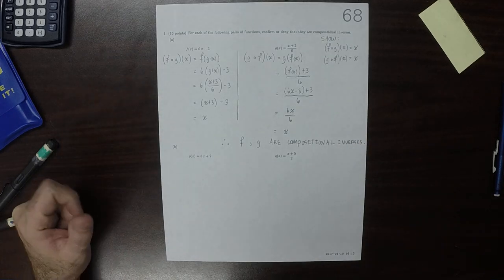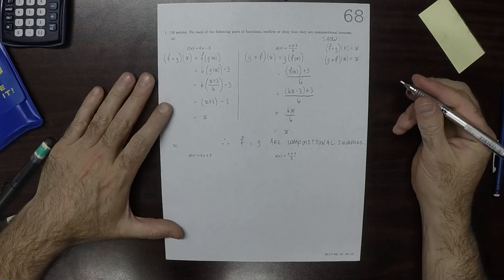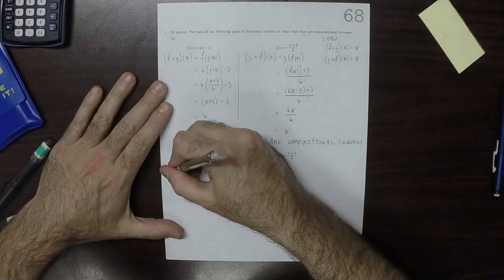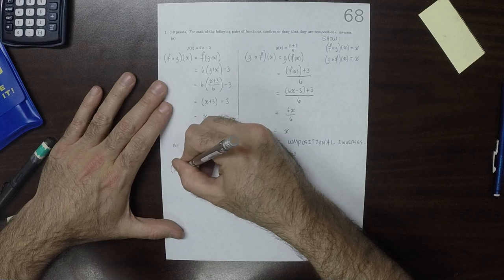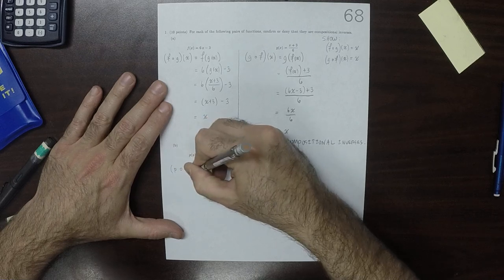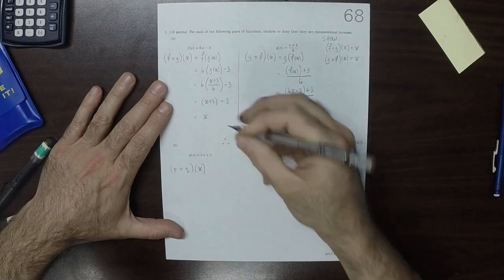Part b is the same question, so we need to do the same thing. So in the first place, let's check p circ q, evaluate at x.